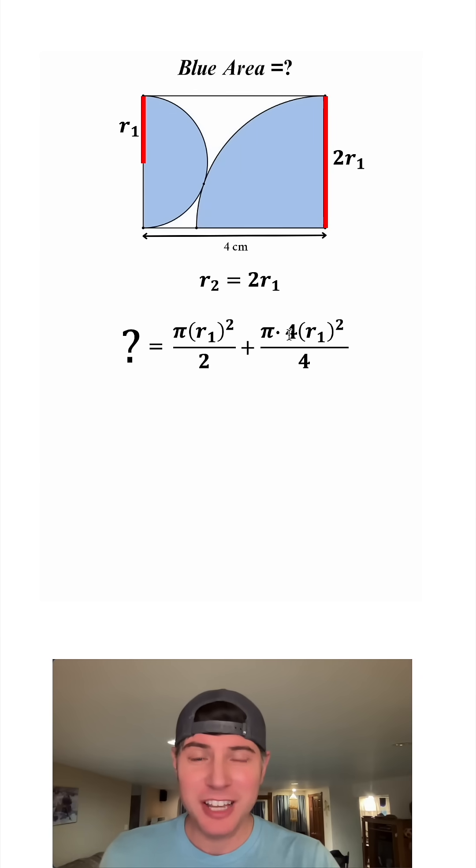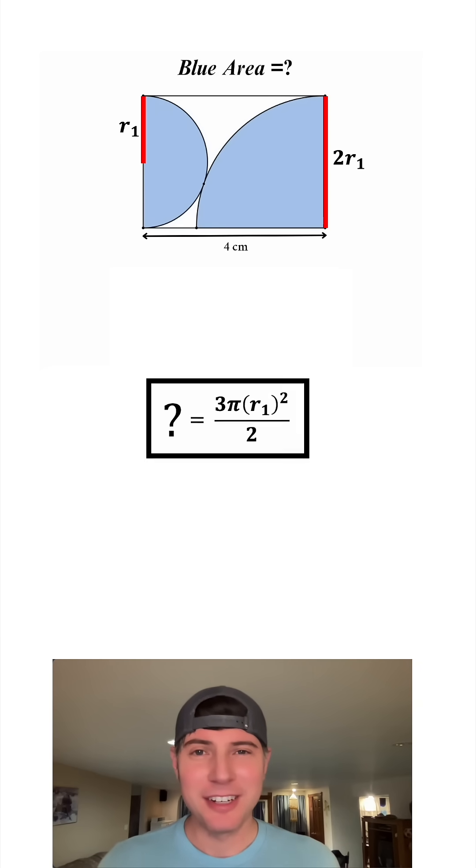At this point, we could just cancel out the 4s, but I want to give it a common denominator with this 2. Let's simplify 4 over 4 to be 2 over 2 and rearrange these. Now we have pi r sub 1 squared over 2 plus 2 pi r sub 1 squared over 2. After we add these together, we have 3 pi r sub 1 squared over 2. This looks important, so let's put a box around it.